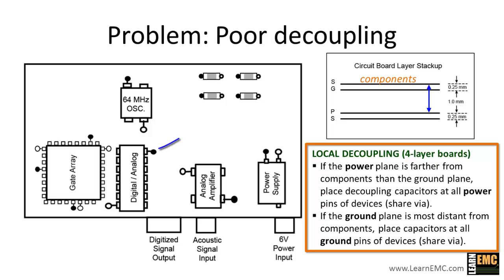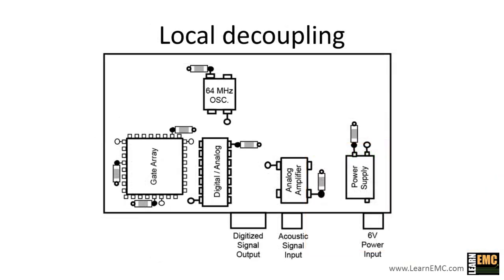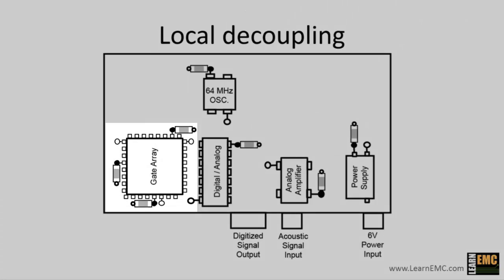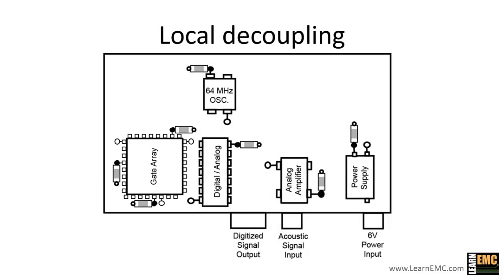Recall that connections to the power plane are shown by filled dots on this layout. We'll place the decoupling capacitors so that they share the via connecting each device to the power plane. Now, if for some reason we could not place the decoupling capacitors right next to the component pin, it would be okay to place the capacitor and the via a few millimeters away. A short trace connected to the active device is fine, but decoupling capacitors should always be connected to the plane through vias adjacent to the mounting pads. So here's where we'll place the decoupling capacitors relative to the devices. Notice that the gate array has three power pins, so we gave it three decoupling capacitors. The other devices have just one power pin, so they each get one decoupling capacitor. This placement of local decoupling capacitors will significantly improve the decoupling on this board, and this takes care of the second major problem that we identified on the original layout.